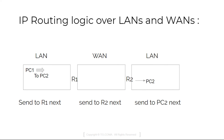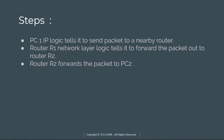This is the IP routing logic over the LAN and WAN. To send the IP packet to router R1, PC1 encapsulates the packet in an Ethernet frame with the destination MAC address of router R1. Router R1 de-encapsulates the IP packet from the Ethernet frame, encapsulates the packet into an HDLC frame using the HDLC header and trailer, and forwards the HDLC frame to router R2. Router R2 de-encapsulates the packet from the HDLC frame, encapsulates it into an Ethernet frame with the destination MAC address of PC2, and forwards the Ethernet frame to PC2. Leased lines have many benefits that have led to their long life in the WAN market.